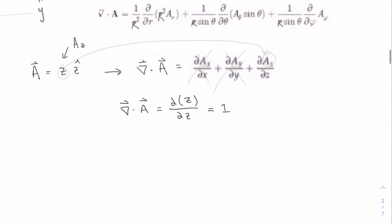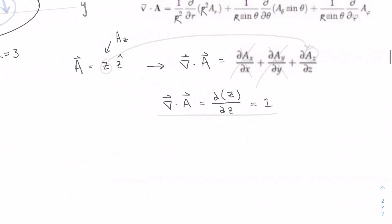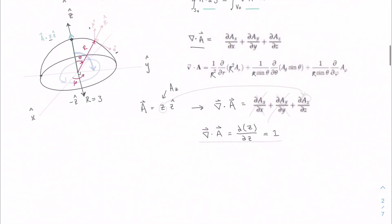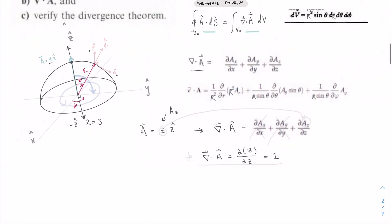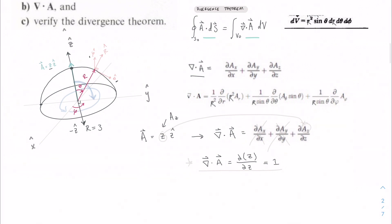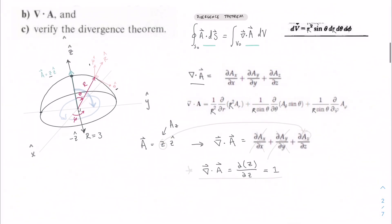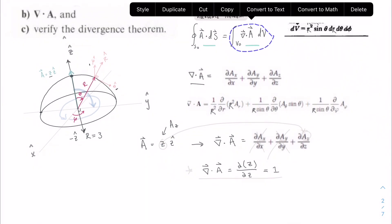So this is by far an easier way to do this, in my opinion. And just in general, I think this is probably the easiest way to do this problem. So we're going to verify the divergence theorem. We need to solve for the right side.